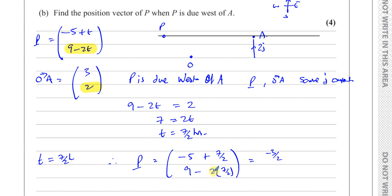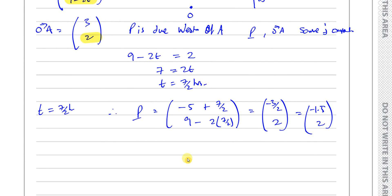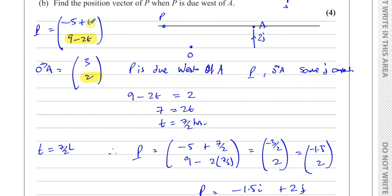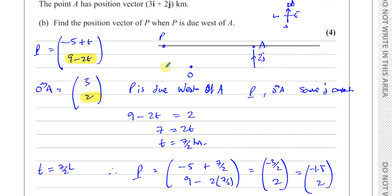When t equals 7/2, p equals (minus 5 plus 7/2) and (9 minus 2 times 7/2). The i component: minus 10/2 plus 7/2 gives minus 3/2. The j component: 9 minus 7 equals 2. So the position vector of P is minus 1.5i plus 2j. That's the answer to part (b).